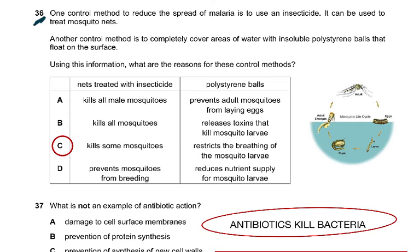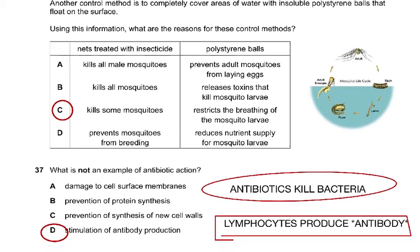Question 36: One control method to reduce the spread of malaria is to use an insecticide to treat mosquito nets. Another control method is to completely cover areas of water with insoluble polystyrene balls that float on the surface. Using this information, what are the reasons for these control methods? Nets treated with insecticide kill mosquitoes on contact. The answer was C; the rest of the options are incorrect.